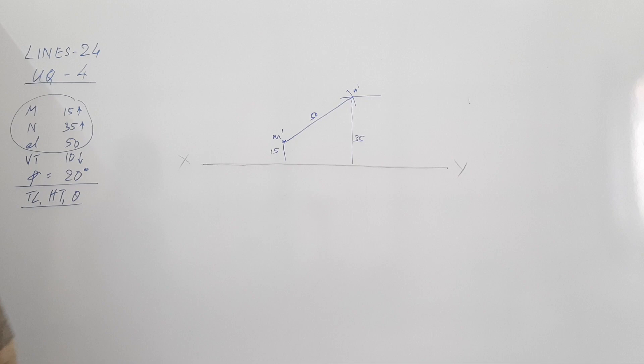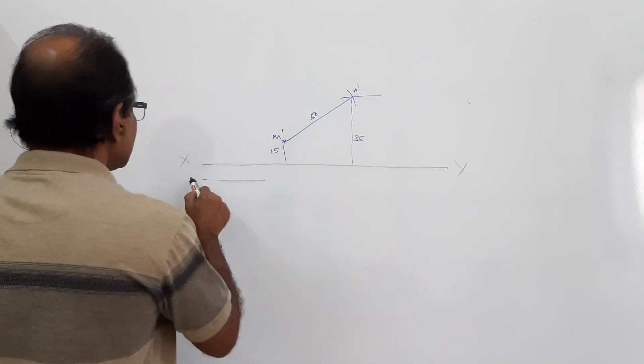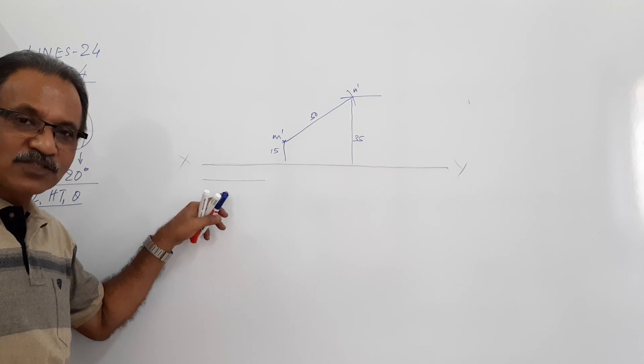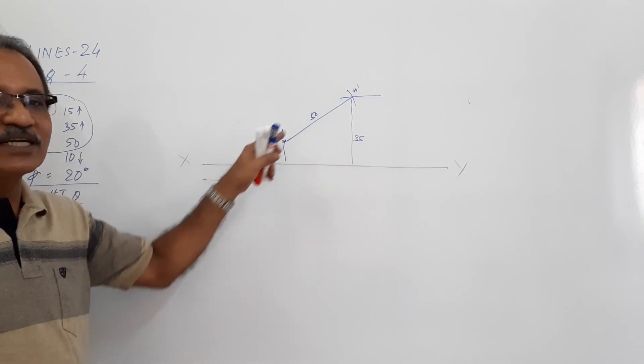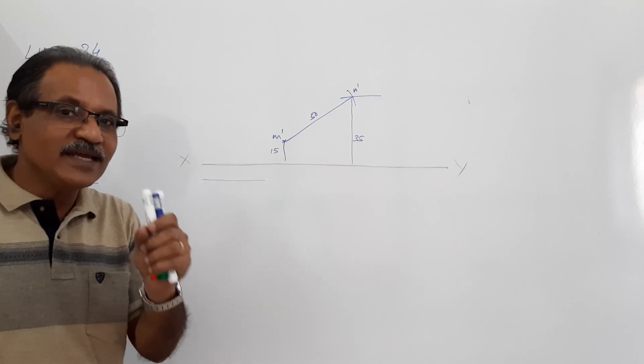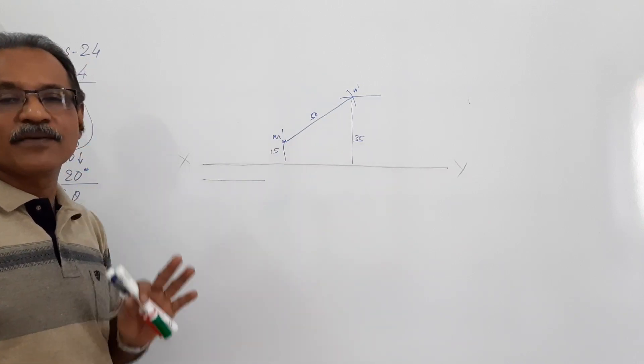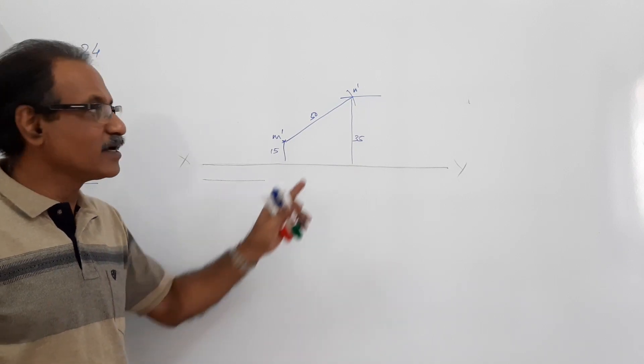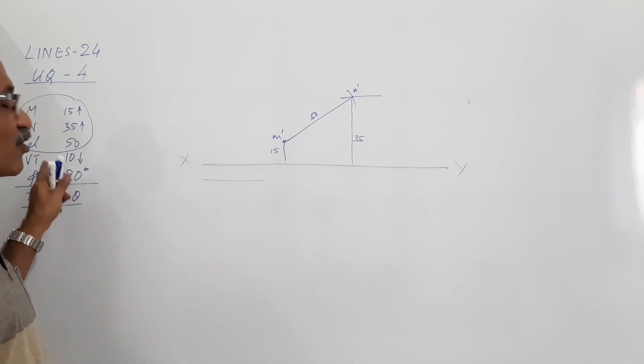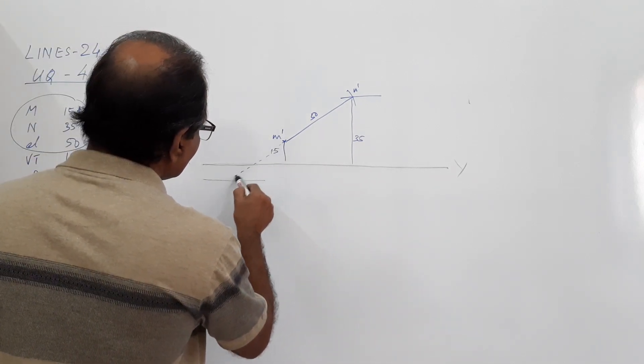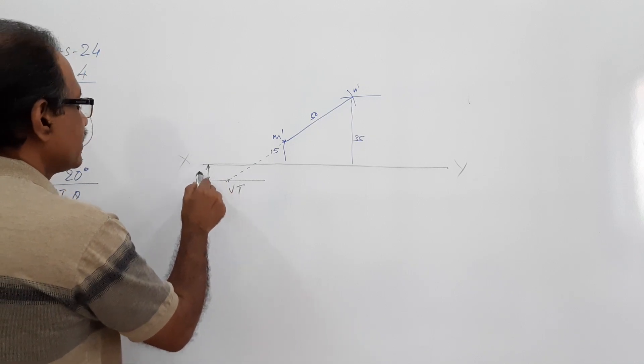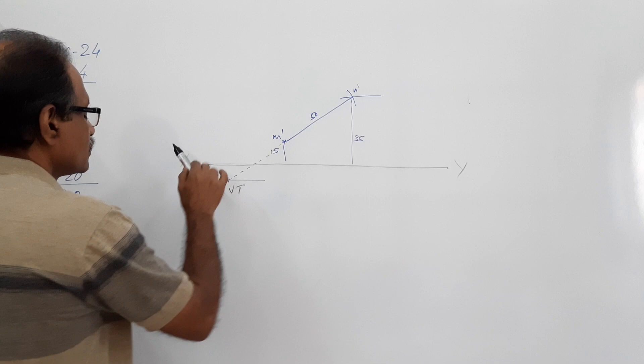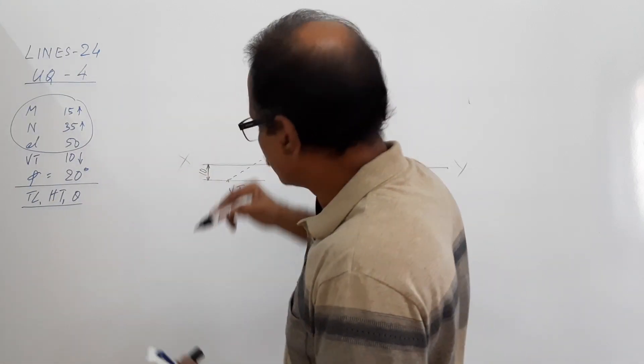M dash and N dash are located - this is the elevation. What else is known to us? You are given VT. VT is shown below HT, so draw a horizontal line. This line contains VT. Where is VT? VT will always be on the extension of the elevation, behind the point. Mark VT here. This is how much? 10.